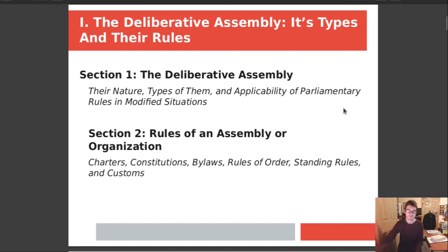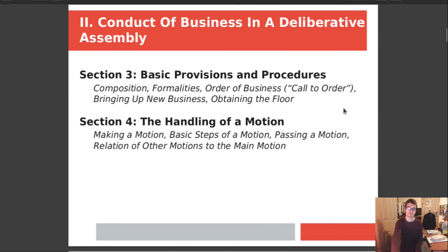Section 2 covers the rules of an assembly or an organization: the charters, constitutions, bylaws, rules of order, standing rules, and customs. We'll talk about precedents and what supersedes what in that section. Section 3 is basic provisions and procedures — all under Chapter 2, conduct of business in a deliberative assembly: composition, formalities, orders of business or the call of order, bringing up new business, and obtaining the floor for debate. Section 4 is the handling of a motion: making a motion, the basic steps of a motion, passing a motion, and the relation of other motions to the main motion.